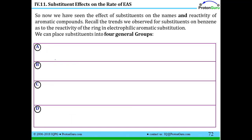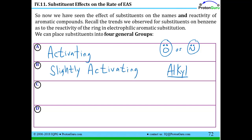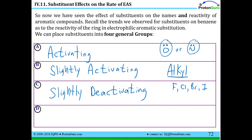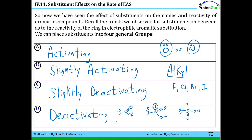To summarize the four categories: first, strongly activating resonance donors with O or N lone pairs directly attached to benzene. Second, slightly activating alkyl groups that stabilize through hyperconjugation. Third, halogens — too electronegative or too large for resonance donation, acting as inductive withdrawing groups and slightly deactivating. Fourth, groups that place a partial positive or formal +1 charge right next to benzene — such as aldehydes, ketones, nitro groups, or sulfonic acid groups — these are the most deactivating.